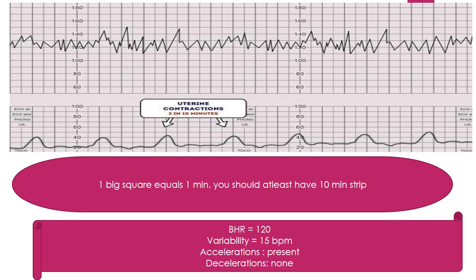To read the CTG, the upper graph shows the fetal heart and the lower one shows uterine contractions. One big square equals one minute, so you need at least a 10-minute strip before commenting. If the strip is less than 10 minutes, simply say it is too short to comment. The baseline heart rate on this example is around 120 beats per minute. Variability — the peak is around 130 and the trough around 110, so about 15 to 20 beats per minute. There are two or more accelerations in this 10-minute strip and no decelerations — so it is a normal, reactive, reassuring CTG.